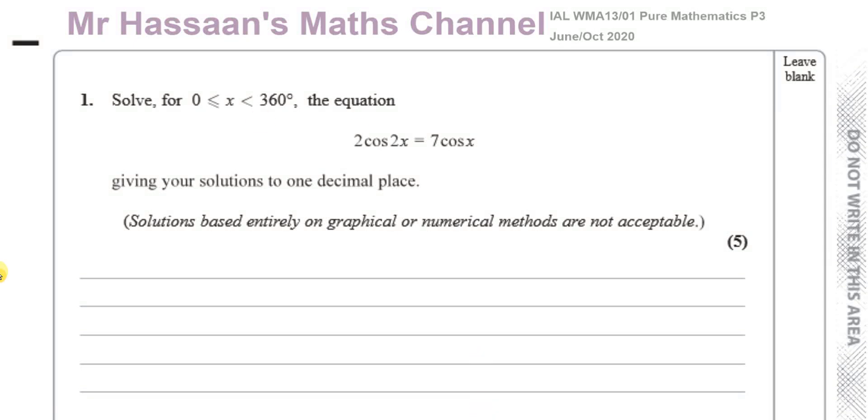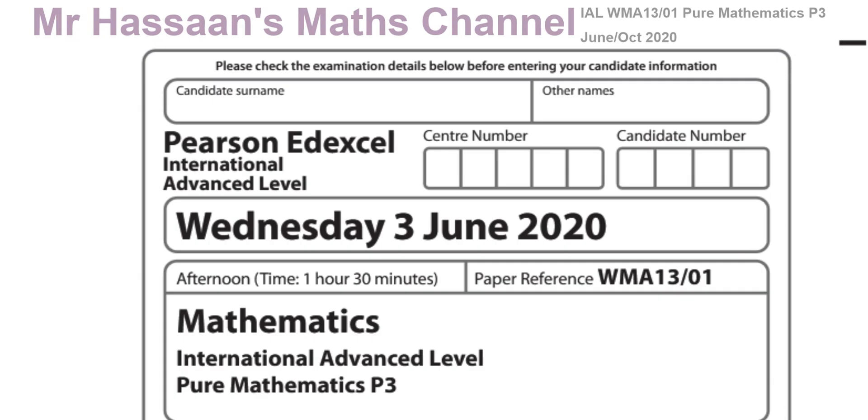Welcome back, this is Mr. Hassan's Maths Channel and I'm now going to be going over this paper which is the International A-Level Edexcel Pure Mathematics P3 paper which was supposed to have taken place in June 2020. However, it was cancelled due to the COVID-19 pandemic and the paper was actually used as the October paper for the same year 2020.